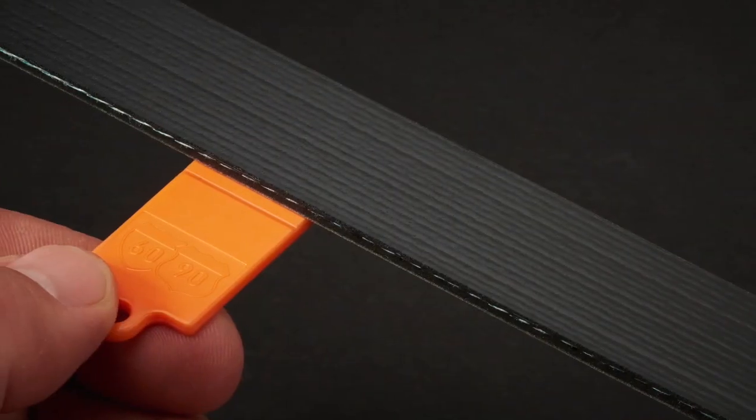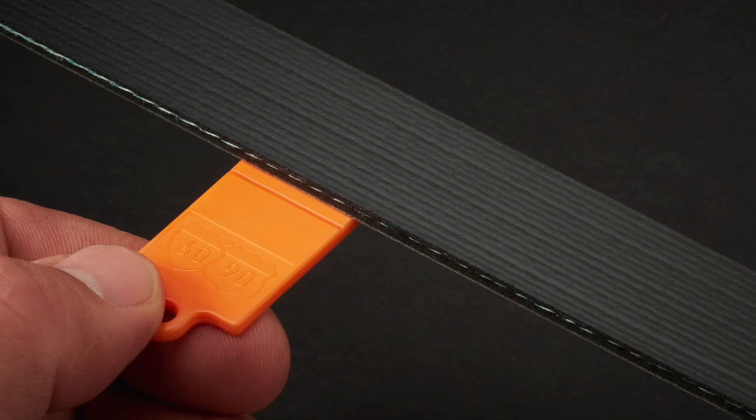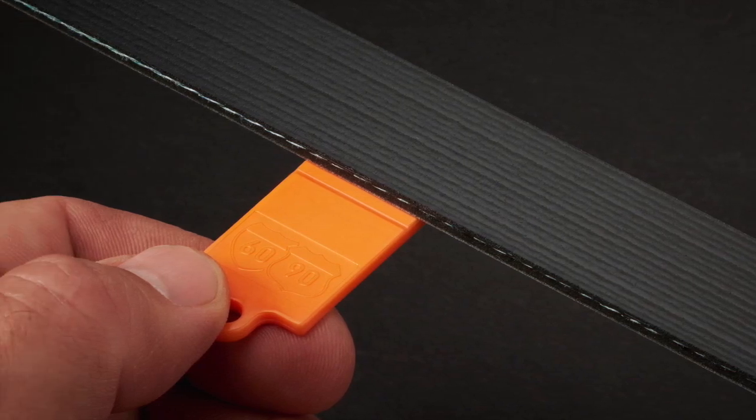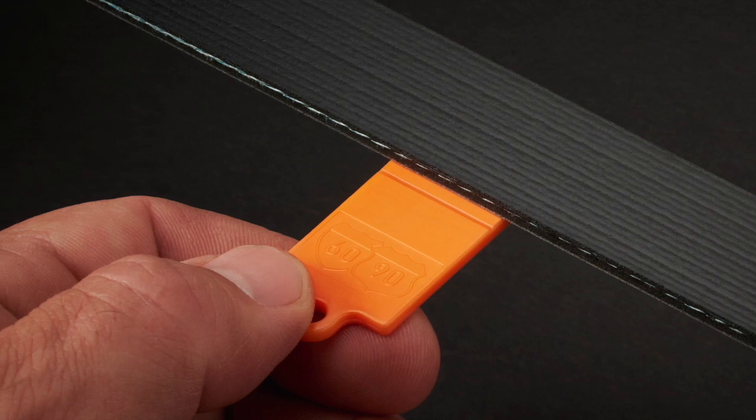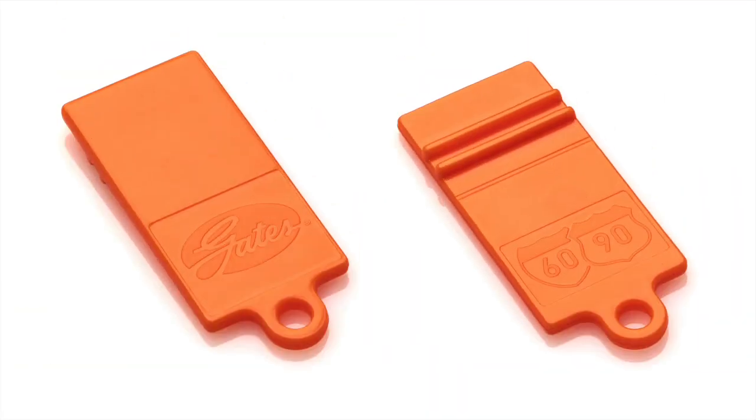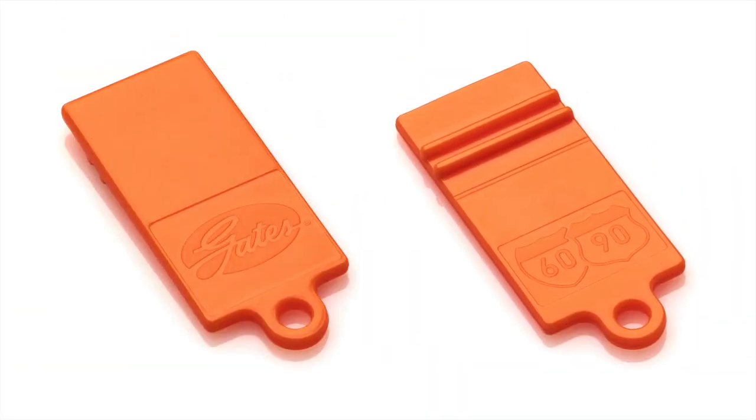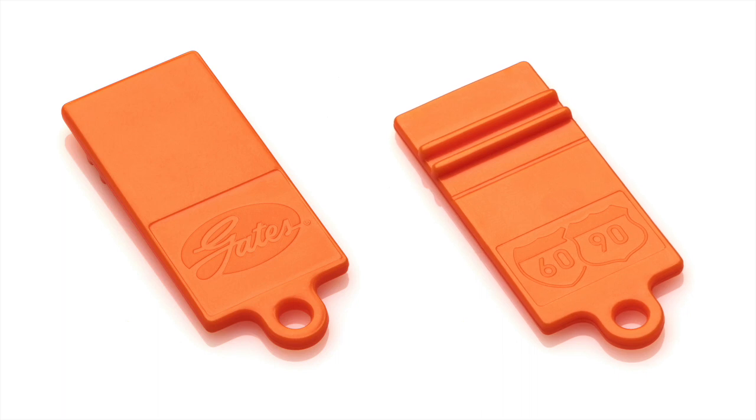This small, lightweight gauge allows technicians to test belt wear on any open, straight surface on the belt, and gives instant pass-fail results. You can use it on or off the vehicle, one-handed and even in places where you can't see.